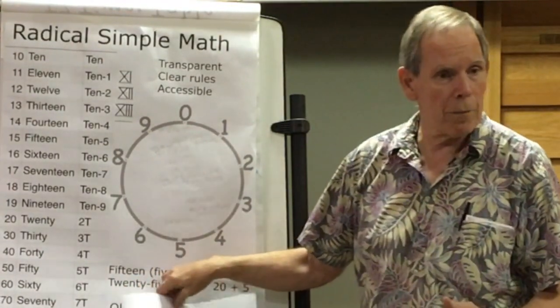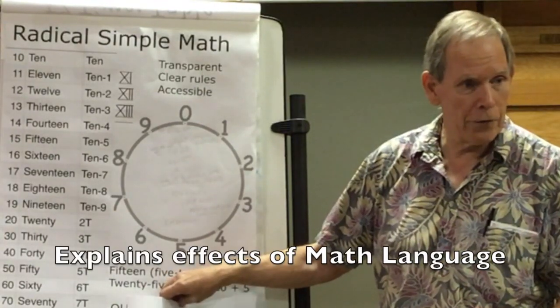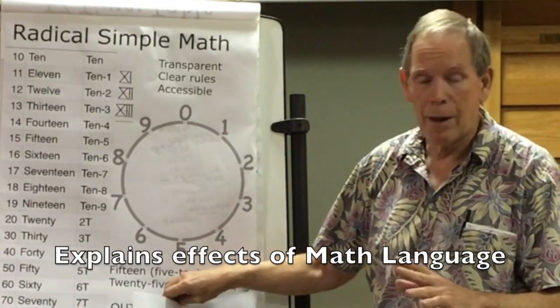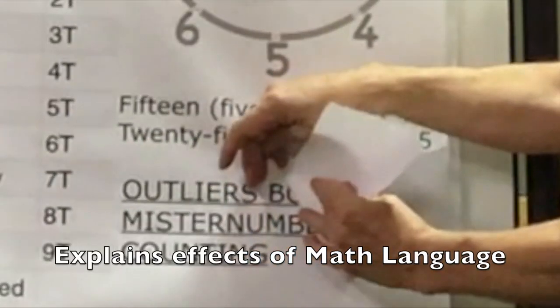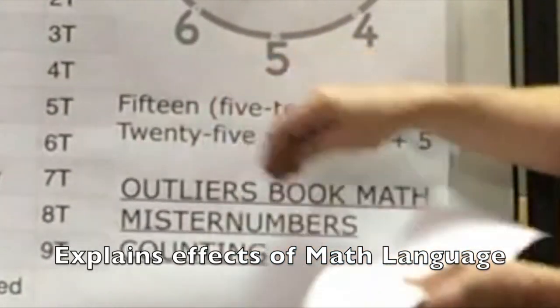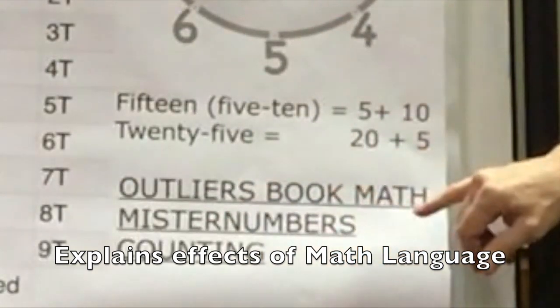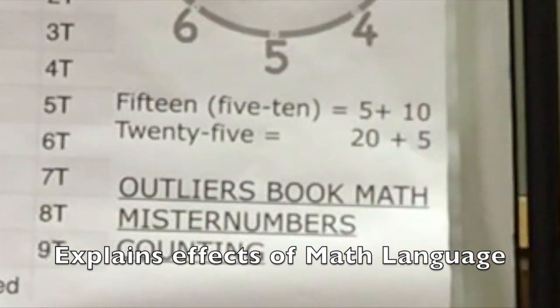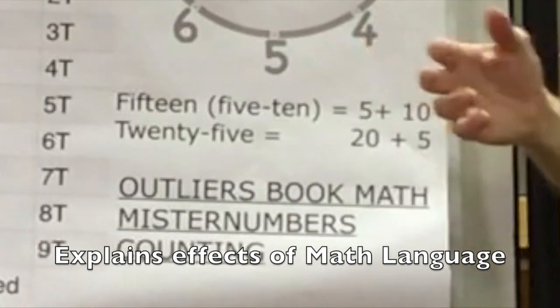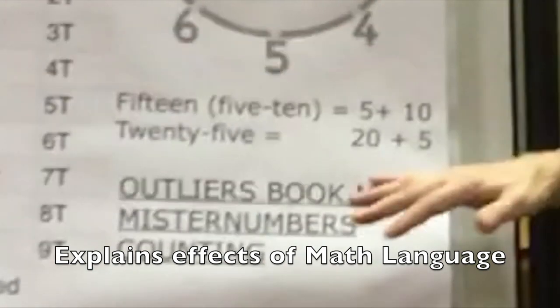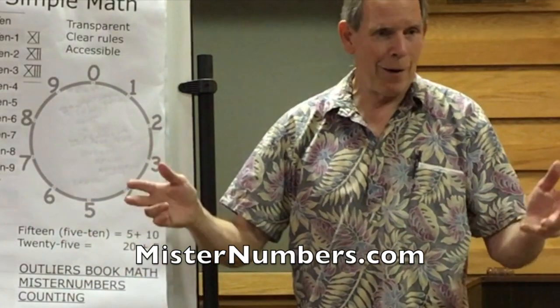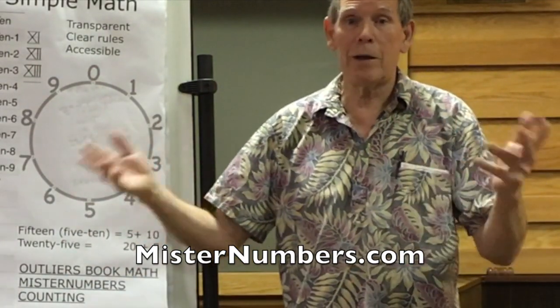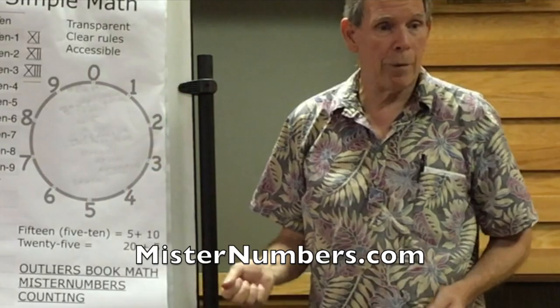There's a book by Malcolm Gladwell called Outliers and he's got a whole chapter on math. And I highly recommend it. If you Google outliers and book and math, those three words will give you the whole chapter will show up on your computer. And it's wonderful to explore that. And if you Google Mr. Numbers and counting, some of my videos will show up and you'll be able to see more of what I'm talking about here.